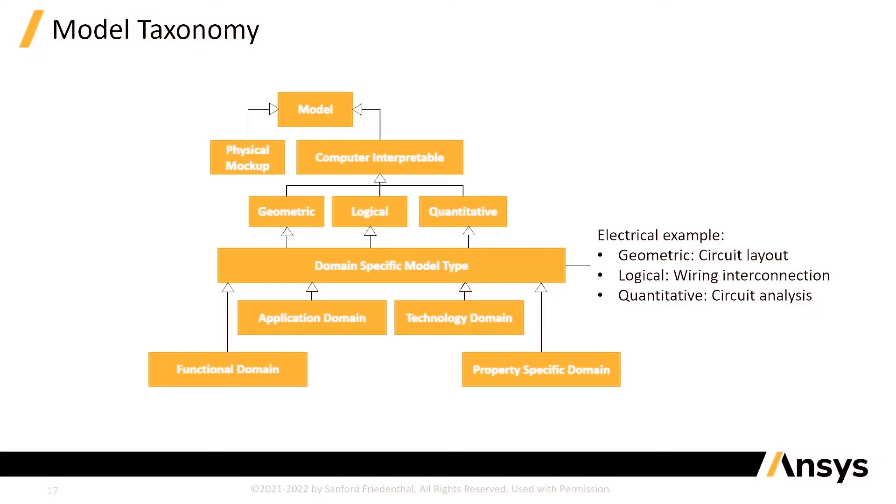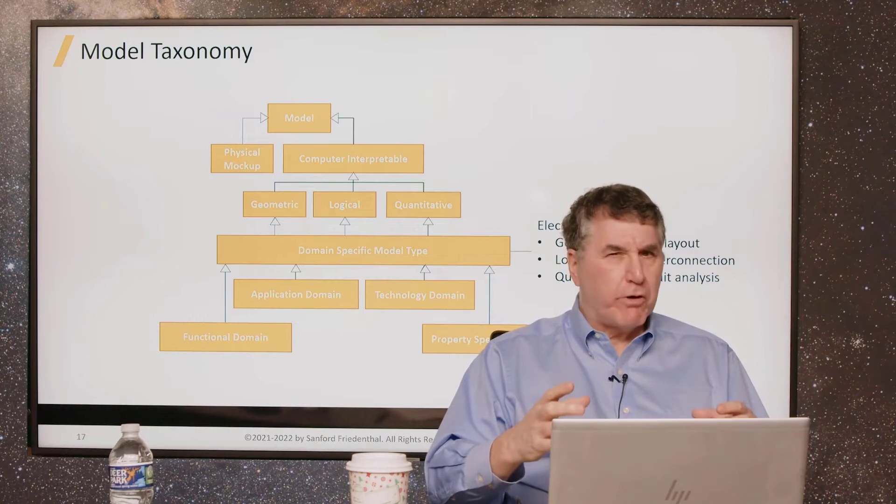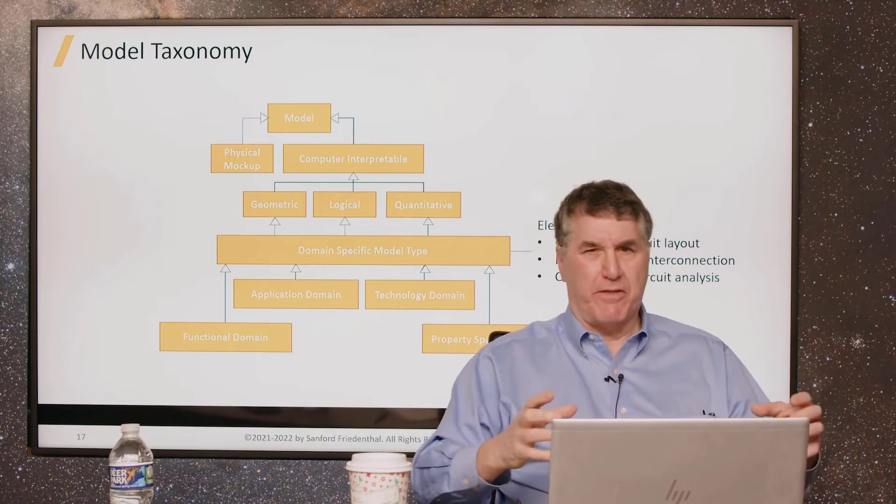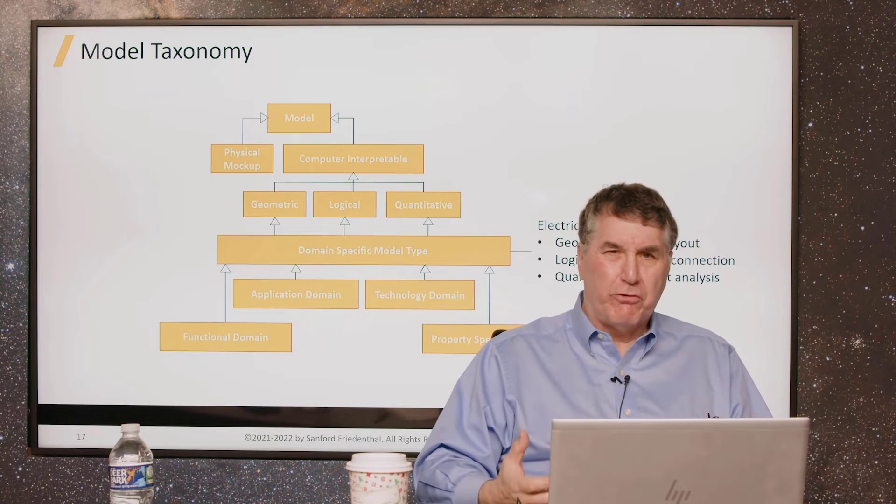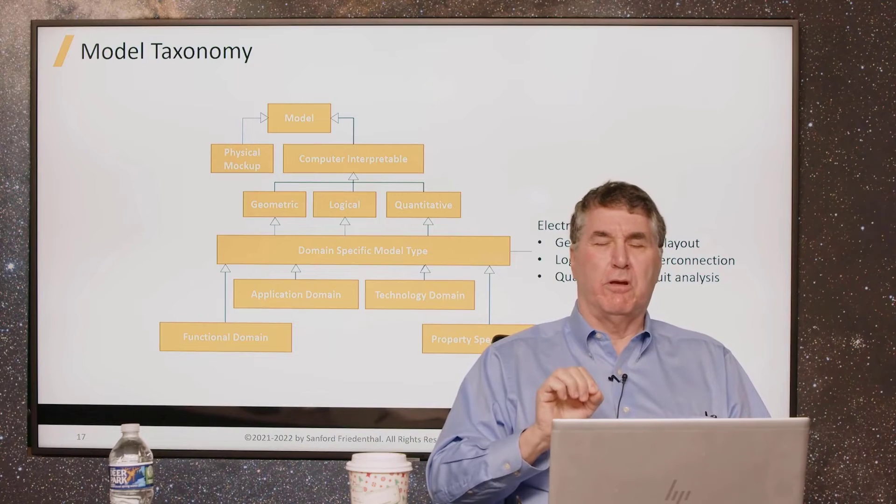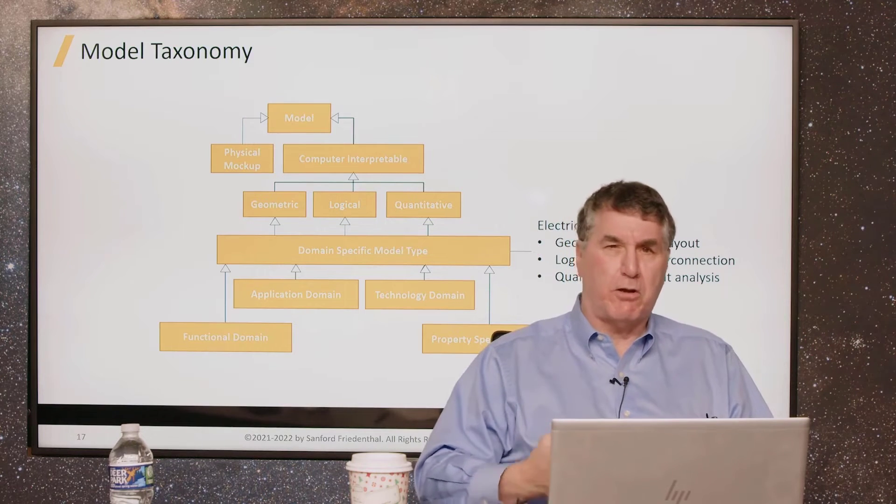In the electrical domain, a geometric model may be a circuit layout, so that would talk about the placement of parts on a circuit board. That's strictly pretty much geometry, positioning of things. A quantitative model would do some form of circuit analysis, like a sneak circuit analysis or some other analysis that you might do in the electrical domain. The logical model shown here is a wiring interconnection model, pin-to-pin. If you think about it, in and of itself, it's not geometric. It's just saying pin A to pin B in different connectors. And it's not quantitative. It doesn't really produce numerical results. So, it's what I'm using the term logical. It's a logical model. And what is obvious from this is a logical model is critically important, along with the geometric model, along with the quantitative model.